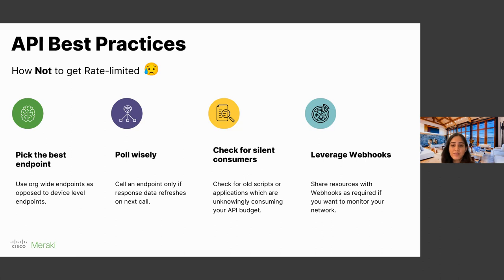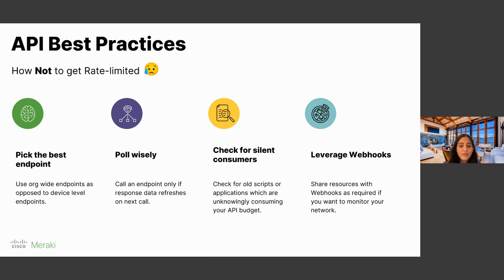The third best practice is to check for silent consumers. We have seen many customers who are not aware of scripts or applications that are old or stale but are still lying in their code base somewhere. Those scripts do call our APIs and the customer has no knowledge that APIs are being called from those hidden scripts or applications. I would like you to make use of our API endpoint that gives you the API requests for the organization — an endpoint that ends with 'api_requests'. If you execute that endpoint, you will see the different applications currently consuming your APIs, and you can point out which application is outdated and go kill it. Always a good practice to check for old scripts or applications that are unknowingly consuming your API budget.